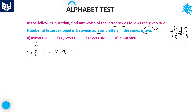First, write down the letters with their respective numbers. If the difference between adjacent letters is 3, then only it is possible to apply this rule — the number of letters skipped between those two adjacent letters is 2.